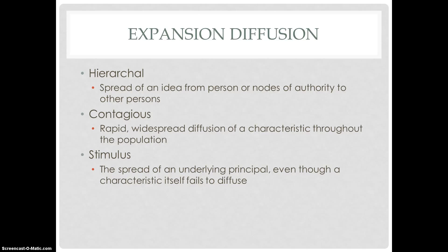Hierarchical diffusion is the spread of an idea from a person or node of authority to other people. For example, if there's a fashion trend from a celebrity and then that passes down through common people, that is hierarchical diffusion.